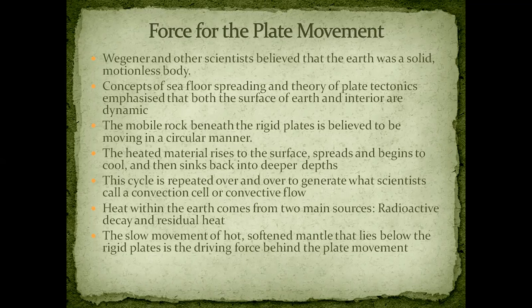The plates move, and the mobile rock beneath the rigid plates is believed to move in a circular manner. The rocks beneath the plates move in a circular direction — the heated material rises to the surface, spreads out, and begins to cool, then sinks back to deeper depths. This cycle is repeated over and over to generate what scientists call a convection cell, or convective flow.